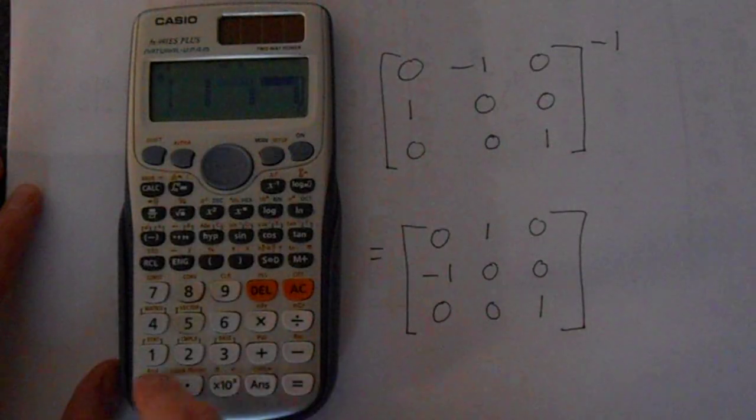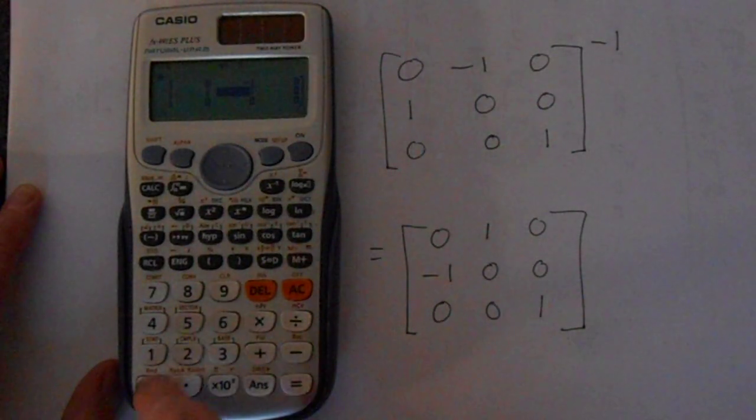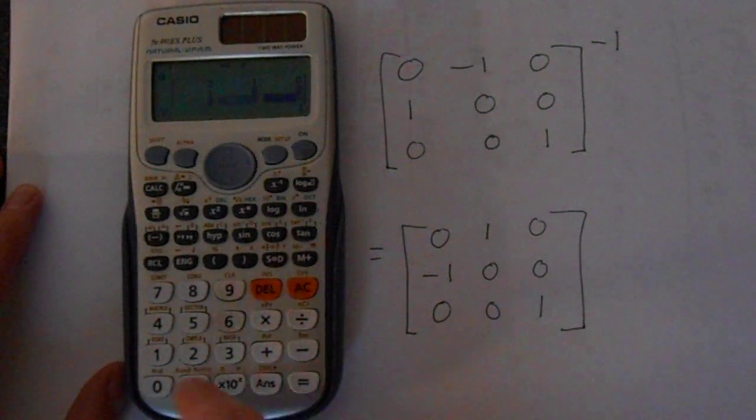0, then we've got minus 1, 0, 0, 1, 0, 0, 0, 0, 1.